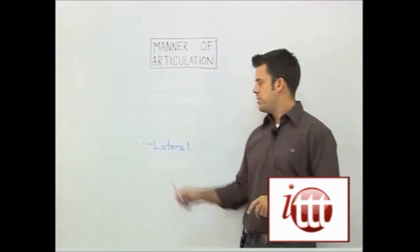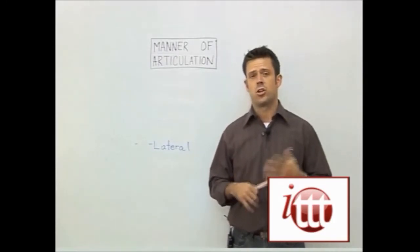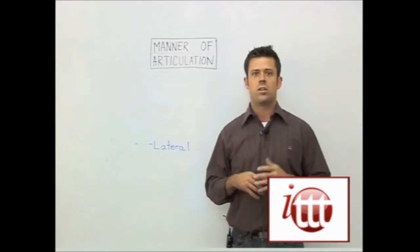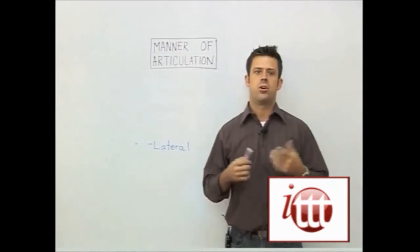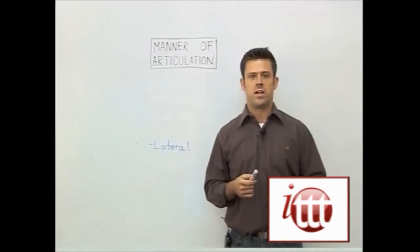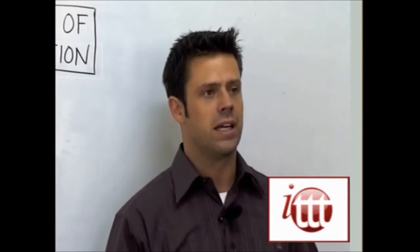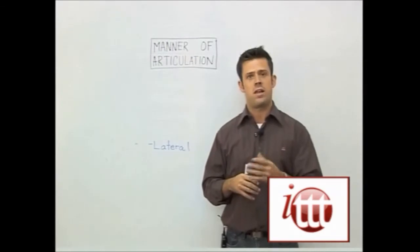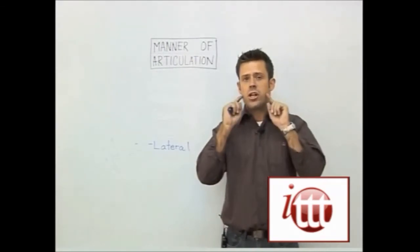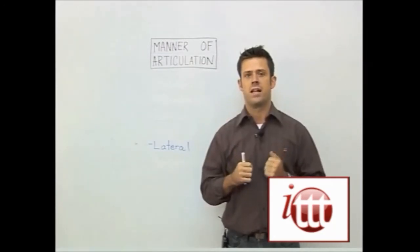Continuing on with the manner of articulation, we have our lateral sound — there's only one, which I like to think of as our lonely lateral sound. The lateral sound is the L sound. It's called lateral because the tip of the tongue is placed on the alveolar ridge, and air escapes through the mouth laterally along both sides of the tongue. If you try that at home, you can get an appreciation of where the air is going — it's moving laterally along the vocal tract.